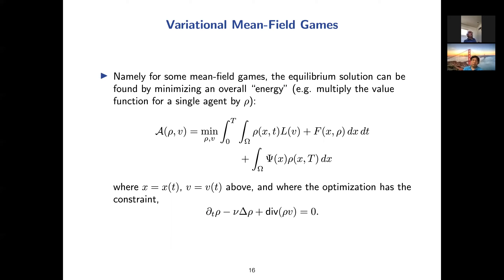The mathematics is similar to what you saw before. The equilibrium solution can be found by minimizing an energy — the integral of rho times the Lagrangian, which depends on velocity, plus an interaction term F of x and rho, plus a boundary condition at capital T. The optimization has a constraint: rho_t plus div(rho v) equals zero. This time there's viscosity, adding a minus nu term, giving a stochastic aspect. We solve this differently — we can't use Lagrangian coordinates because of the viscosity; things no longer propagate along characteristics.